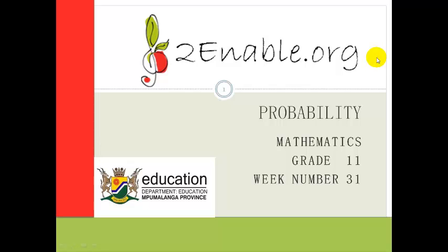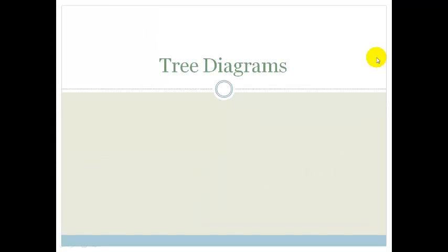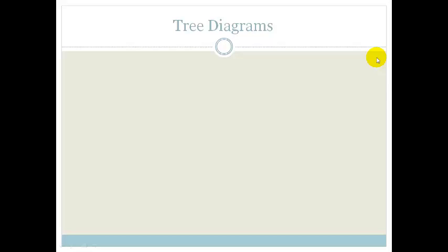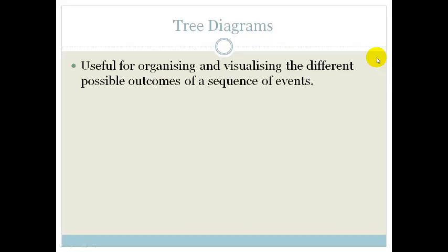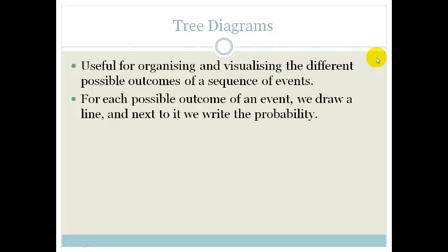Good day grade 11's. Welcome to your next lesson in probability. We've learnt about Venn diagrams and how to use them to help us work out probability. Now we're going to learn about a tool called tree diagrams. Tree diagrams are very useful in organising and visualising the different possible outcomes of a sequence of events — events that happen one after the other. For each possible outcome of an event, we draw a line and next to it we write the probability.